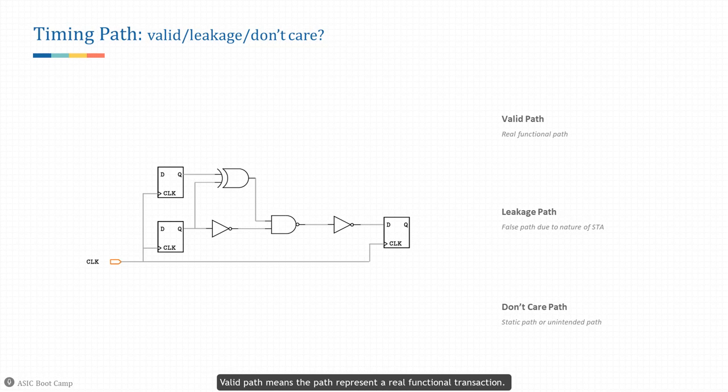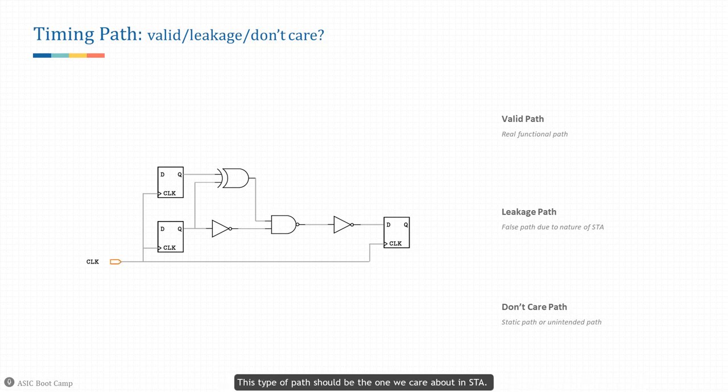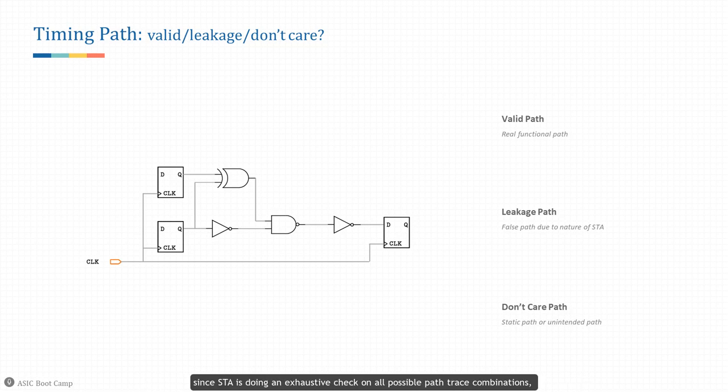A valid path means the path represents a real functional transaction — the signal has to go through the cloud of logic and be captured by the endpoint in order to have the design functioning well. This type of path should be the one we care about in STA. A false path means even though the path from the start point to the end point exists topologically, since STA does an exhaustive check on all possible path-trace combinations, it is not required functionally for the chip to operate.